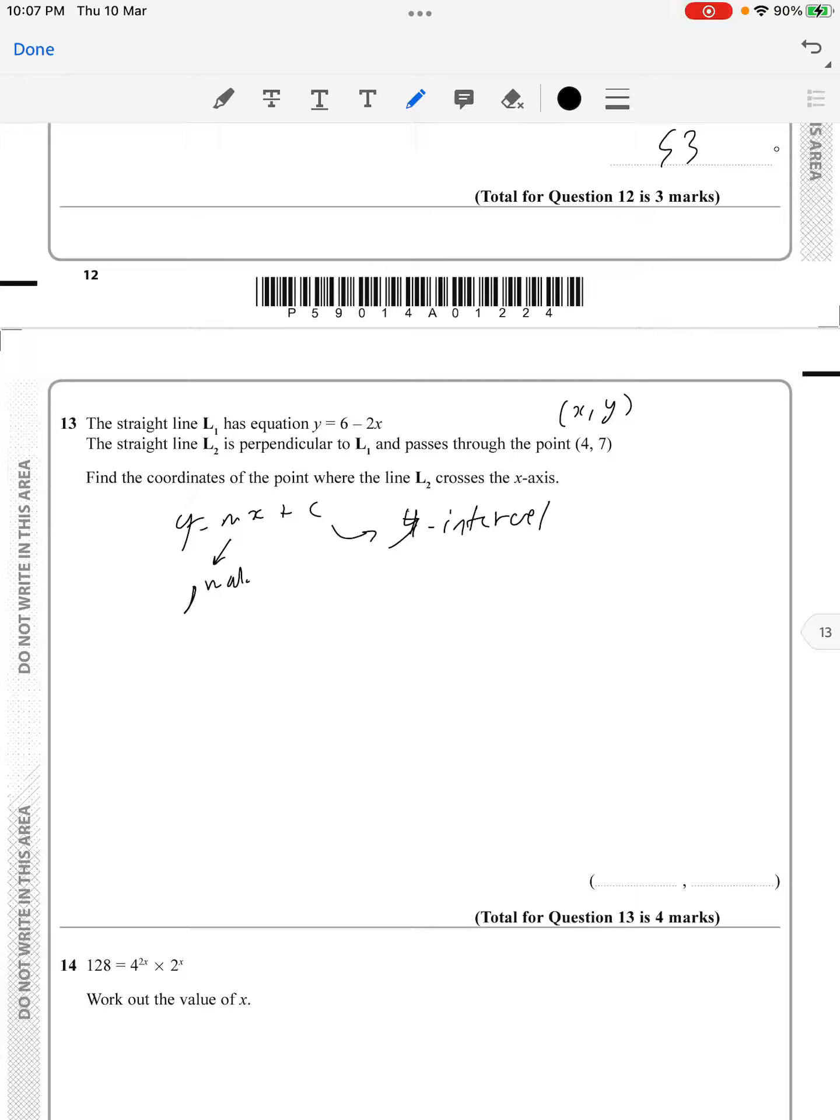where l2 crosses the x-axis. For perpendicular equations, we use opposite reciprocal slopes. We start with y equals six minus two x and rearrange this in the form y equals mx plus c. Once we rearrange that, we find the...